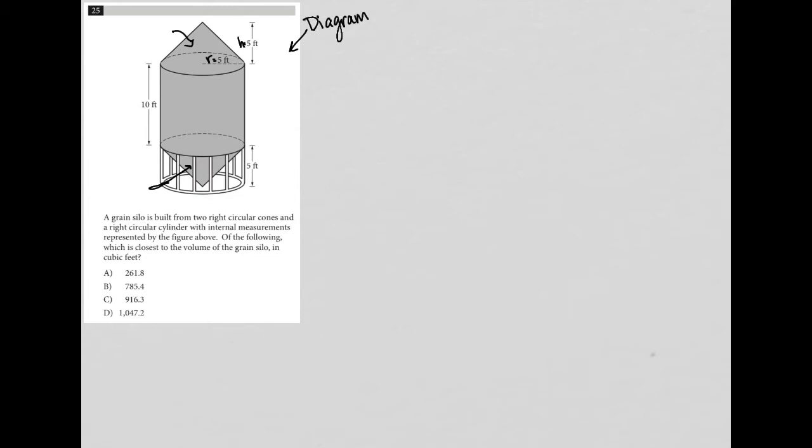We're looking for the volume. We know that this grain silo has two right circular cones and a right circular cylinder. So how do we find the volume for a cone?